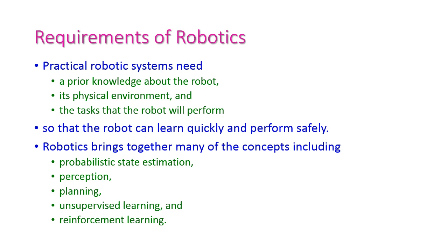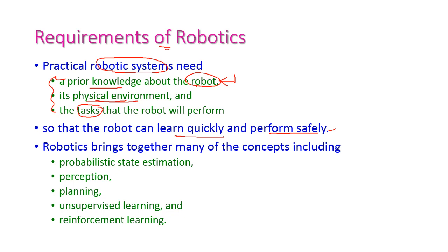When it comes to practical robotic systems, the robot should have prior knowledge — historical data stored in a database — and should know about its physical environment and the tasks it will perform. These are important for the robot to learn quickly and perform tasks safely. Robotics brings together many artificial intelligence concepts like probabilistic state estimation, perception, planning, unsupervised learning, and reinforcement learning.